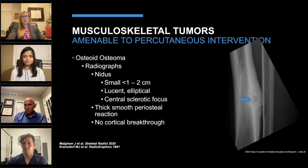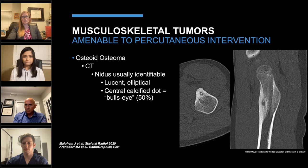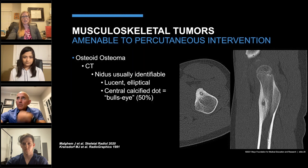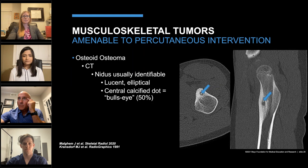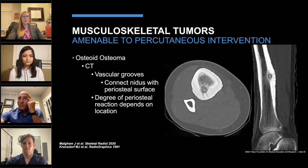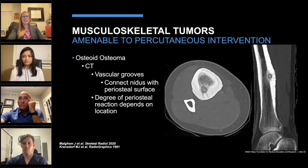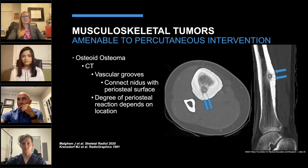On CT, the nidus of an osteoid osteoma can almost always be identified — going back to our seven-year-old, we see it beautifully here even though it wasn't visible on radiographs. About 50% of the time, a calcified central dot will be seen within the radiolucent nidus, giving the 'bullseye' appearance. Another very characteristic CT feature is thin linear, sometimes serpentine, radiolucencies connecting the nidus with the periosteal surface — corresponding to hypertrophic vascular channels, known as the 'CT vessel sign' or 'vascular groove sign,' detected in about 80% of cases on high-resolution CT.